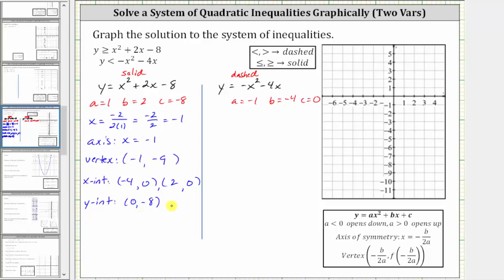Let's graph this parabola and shade the solution for the inequality — we make a solid parabola. First, plot the vertex at negative one comma negative nine. The axis of symmetry is the vertical line through the vertex. The x-intercepts are negative four comma zero and two comma zero — both three units from the axis of symmetry, which confirms our work. The y-intercept is zero comma negative eight, with a corresponding symmetric point on the left. The solid parabola is drawn through these points.